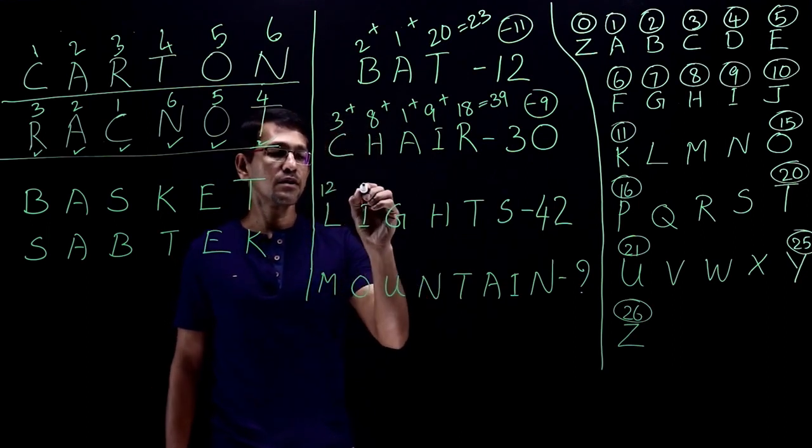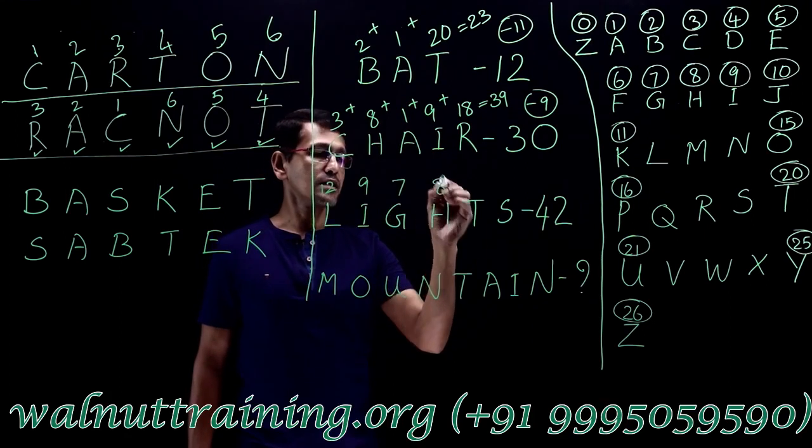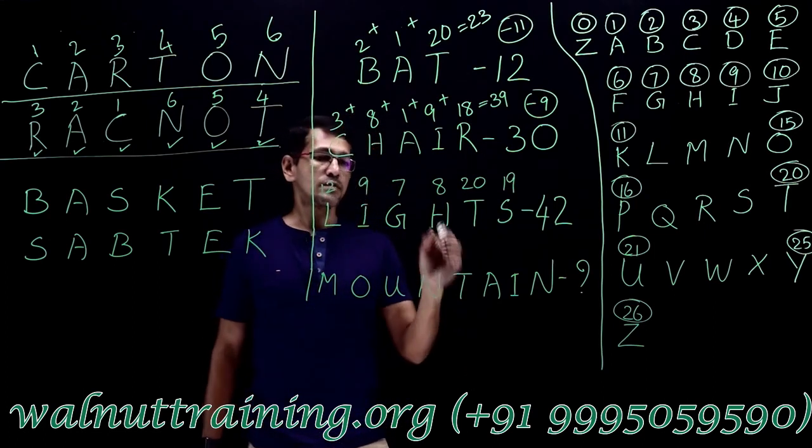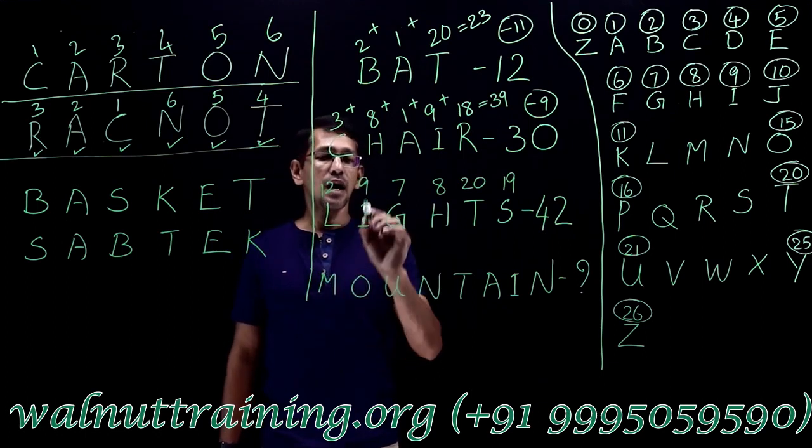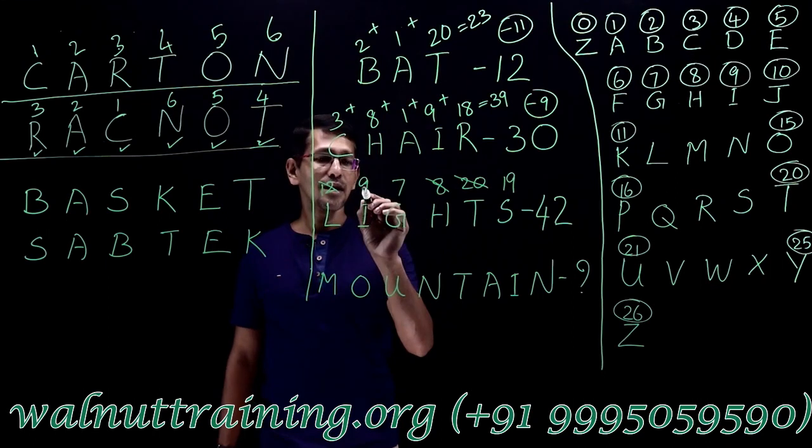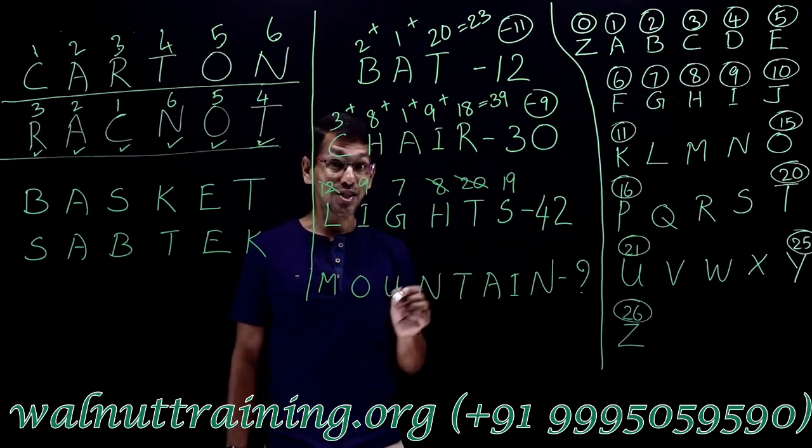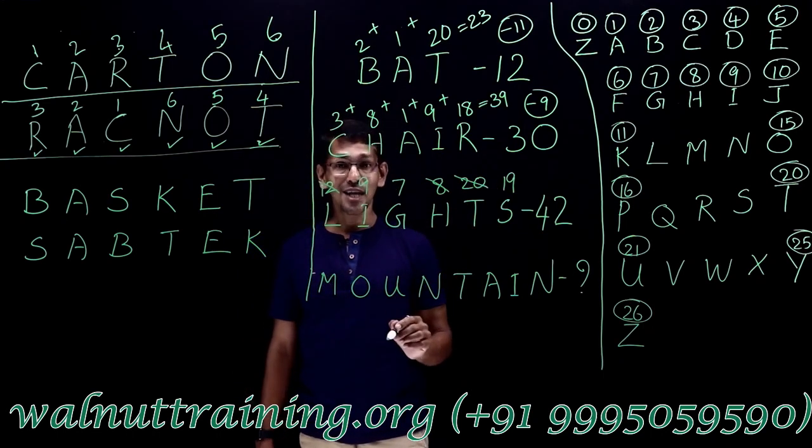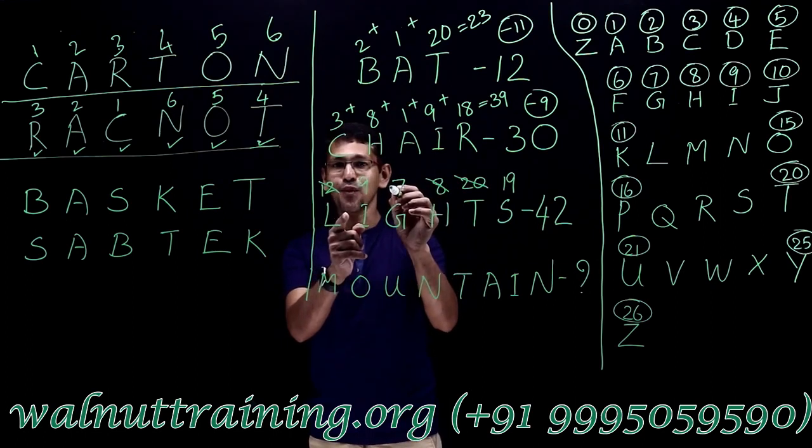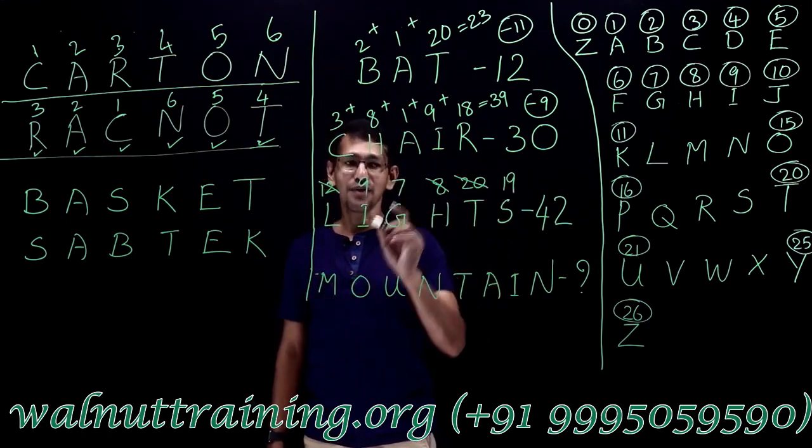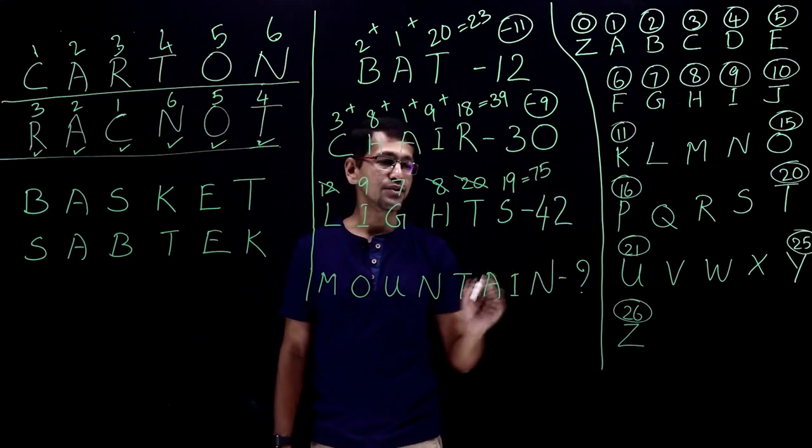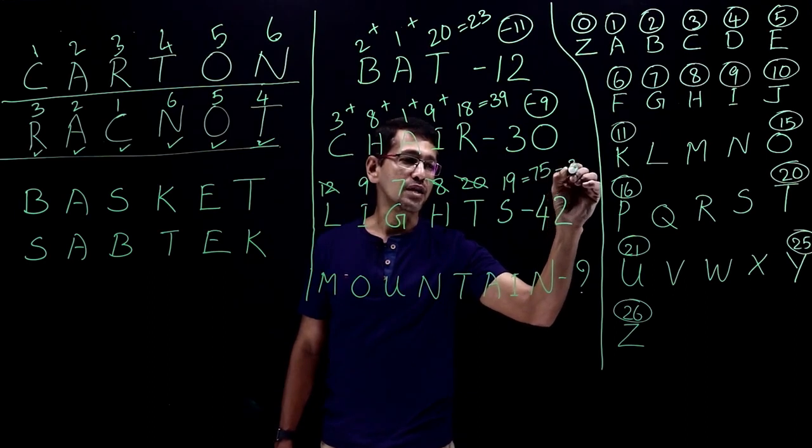Now lights, the code is 42. So 12, 9, 7, 8, 20, and 19. So when you add it up, what happens here? Well, I go for this 12 and this 8. 12 plus 8 is what? 20. 20 plus 20, 40. Then the next thing, 9 plus 7, 16 actually. 16 and 19. So 19 plus 16, what is it? The best way, 19 make it as 20, we take 1 from 16. So that becomes 15. So 20 plus 15, 35. Already we have 40. 40 plus 35, 75. So the sum is 75. This is 42. The difference is what? 33. So minus 33.